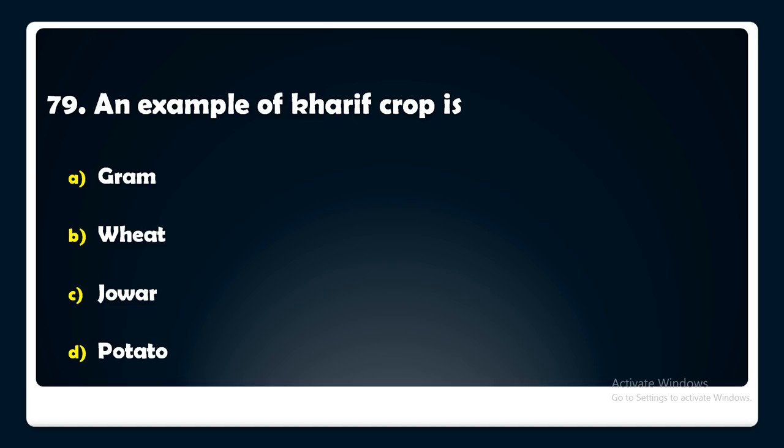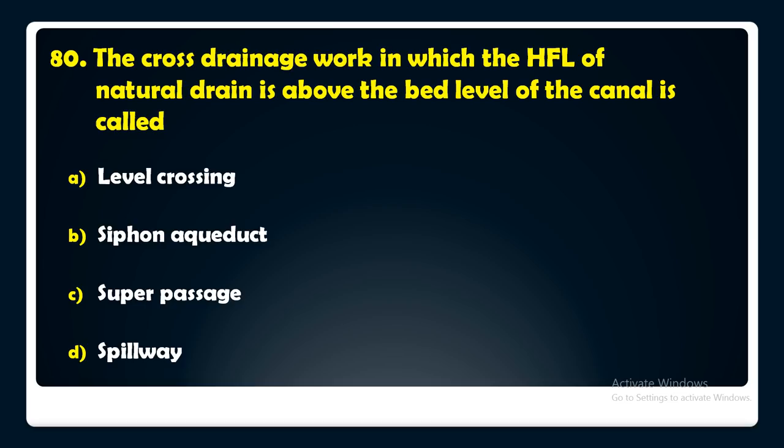The cross drainage work in which the high flood level of the natural drain is above the bed level of the canal is called — level crossing, siphon aqueduct, super passage, or spillway? The answer is: it is called a siphon aqueduct.